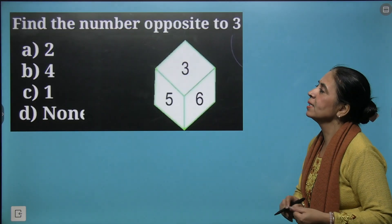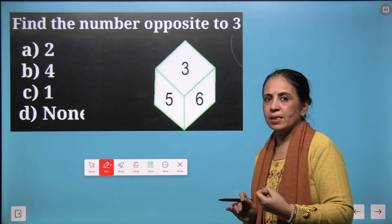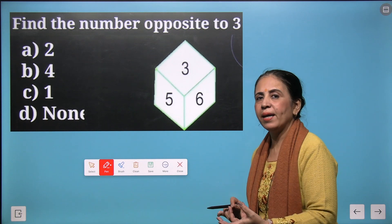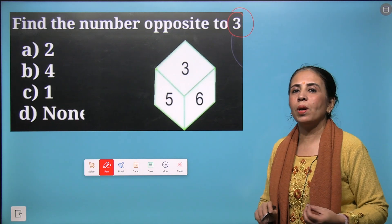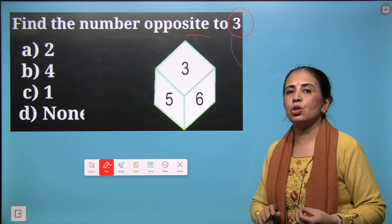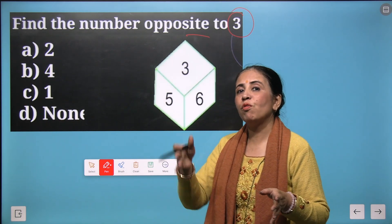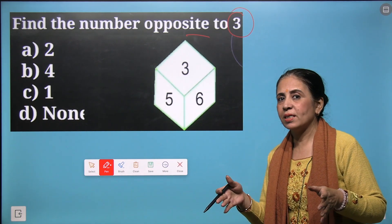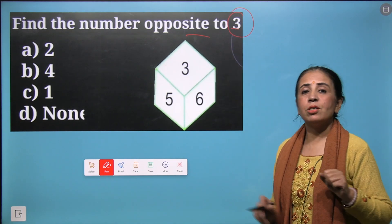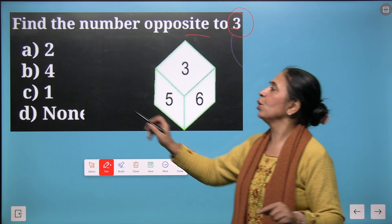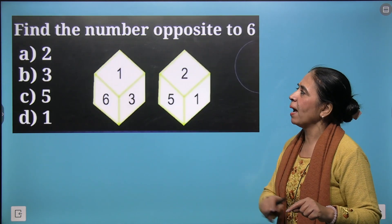Now we solve some questions based on dice. So suppose you have a dice. You are rolling it and you want to know that what will be the number opposite to 3. Here you need to remember a rule that the sum of digits on opposite sides of the dice is always 7. So 7 minus 3 is 4. Your 4 is correct option.